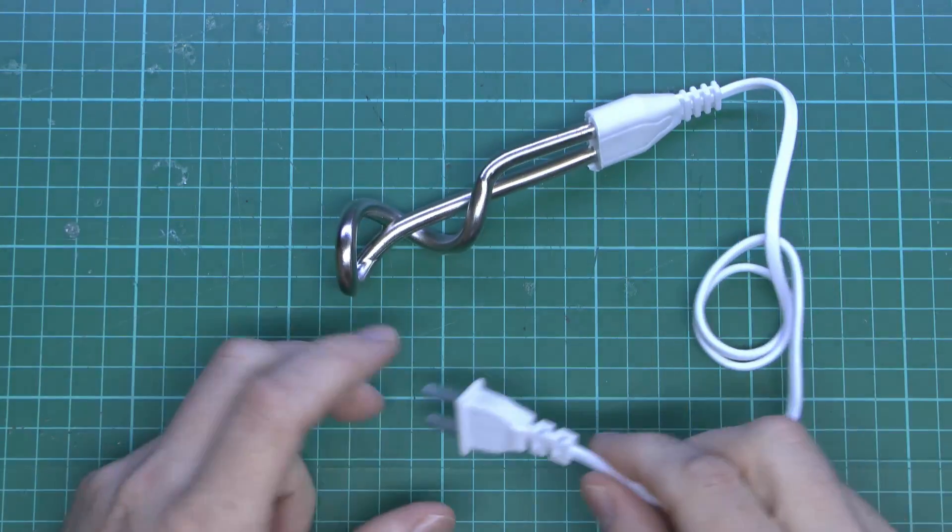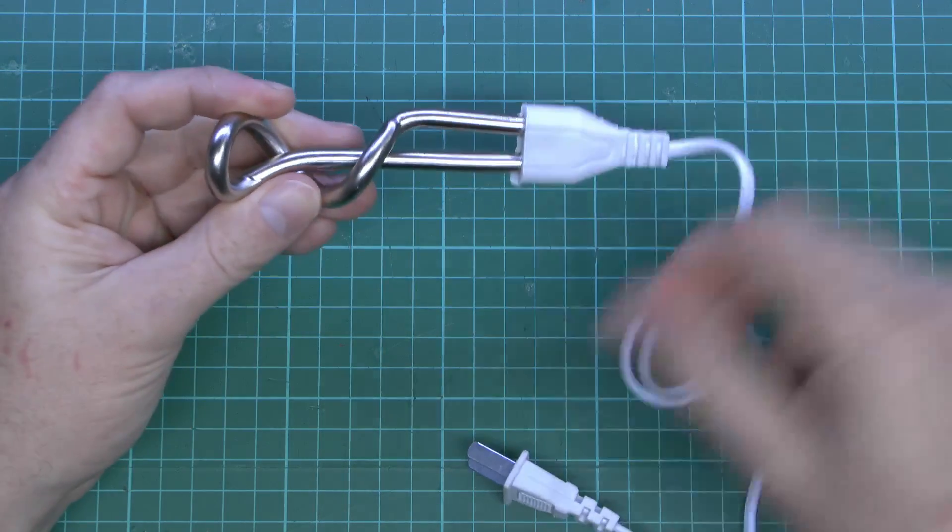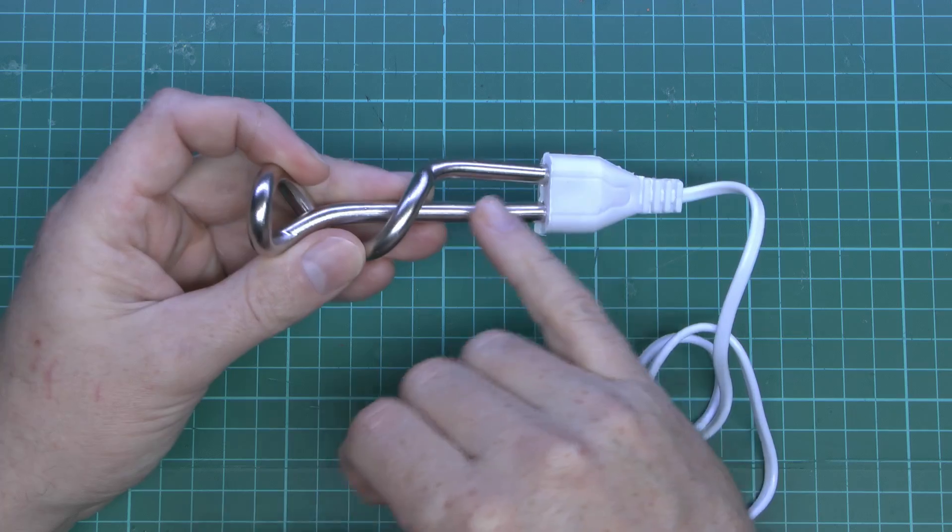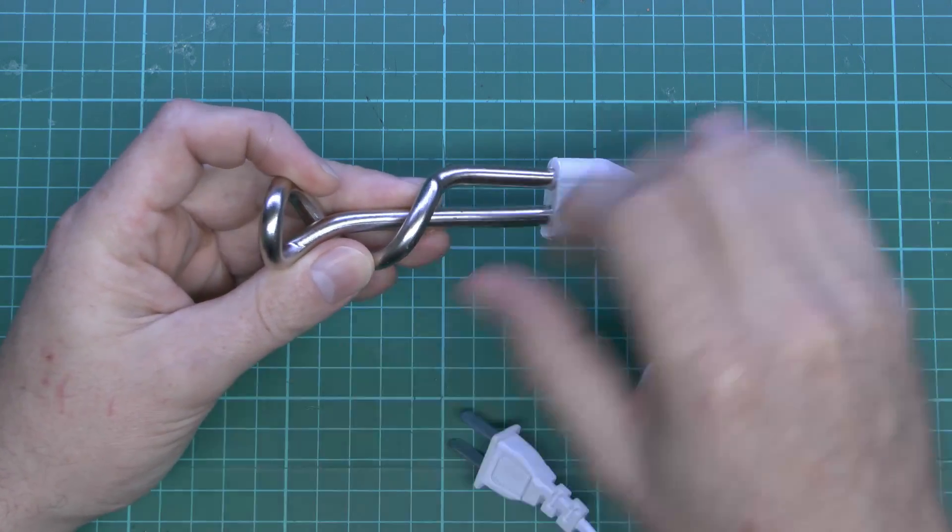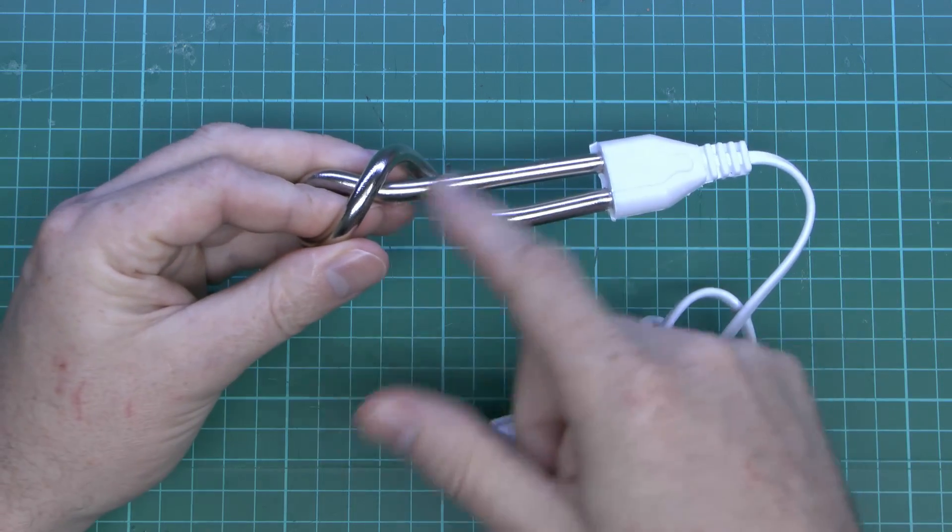Now notice there's no earth connection on this. If this was an approved item for use in the UK and other normal countries, then it would have a three prong plug, and the outer covering of this would be connected to the earth pin, so if any kind of fault occurs inside, the element would short onto the casing.